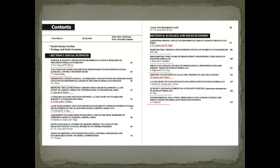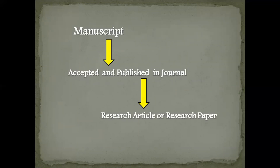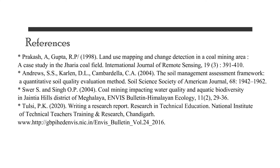Thus, research journal articles are the building blocks of a research journal, and both research journals and research articles are significantly interdependent. Lastly, when a researcher writes a script and completes it ready for publication, at that stage it is called a manuscript. Once the manuscript is submitted to a journal and accepted and published, it is technically called a research article or a research paper. Research article and research paper are synonyms.